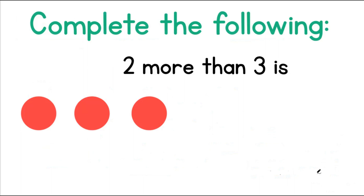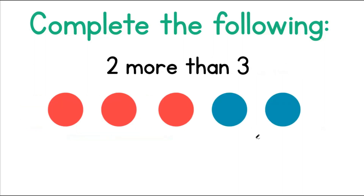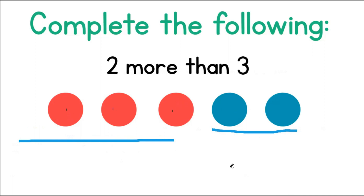Now let's complete the following: 2 more than 3 is? 1, 2, 3, then 4, 5. So 2 more than 3 equals 5.